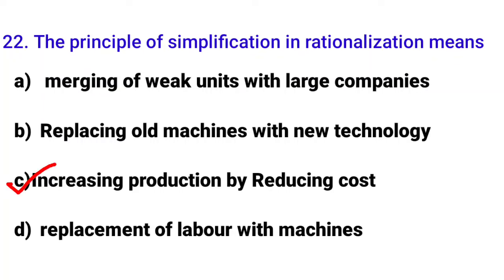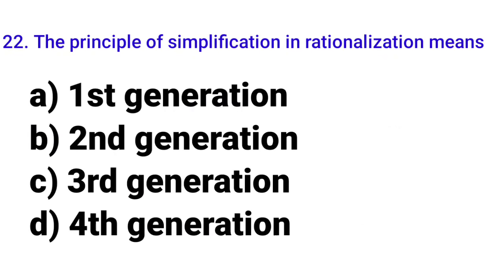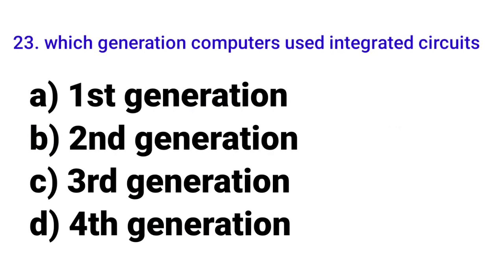With 22 MCQs done, the remaining MCQs are about computer subjects — the last 8. Twenty-third MCQ: 'Which generation computer used integrated circuits?' Every computer generation has a keyword. The answer is option C: third generation.